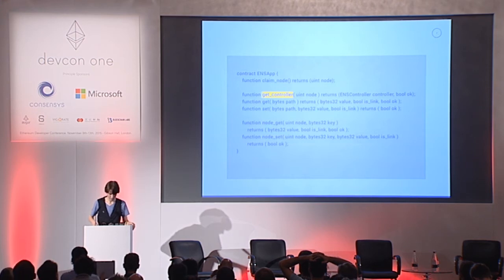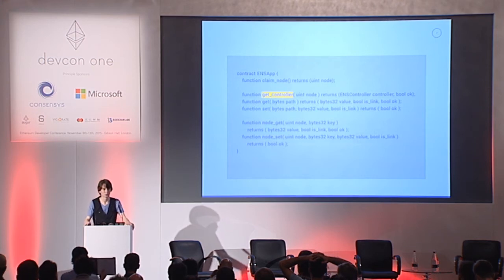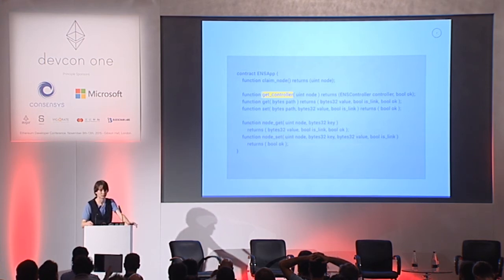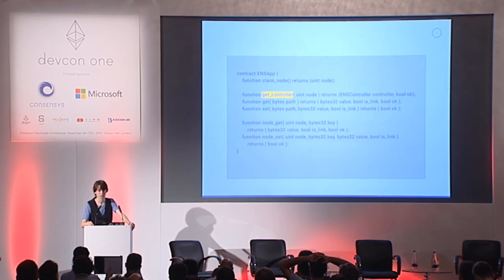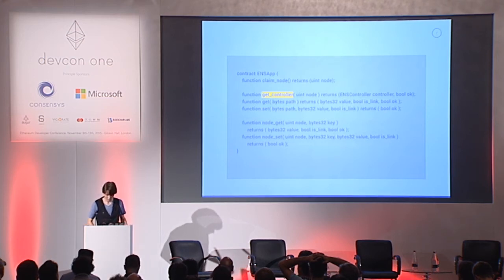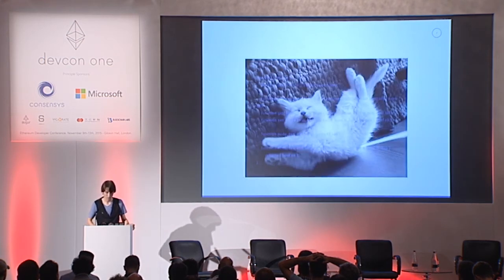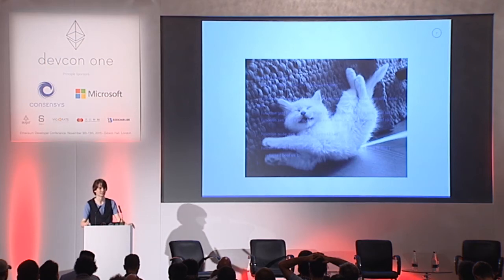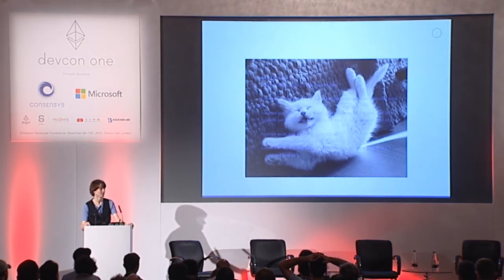We also have the node get and node set functions, which are just ways of saving on lookup costs — you can look up values on nodes and set values relative to nodes. And then finally, the get controller function, which simply takes a node ID and returns the controller contract. That was a bit of a data dump, so here's a kitten — take a breather. All right, jumping back in three and two.